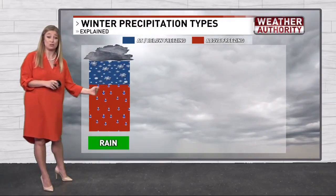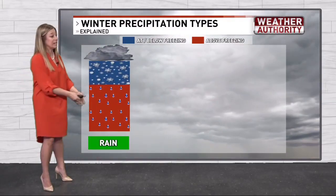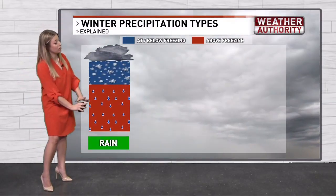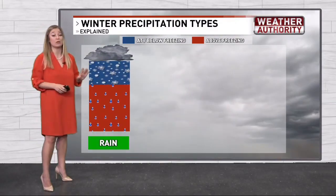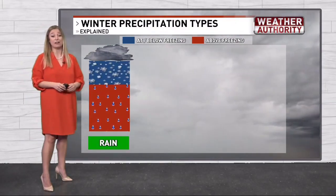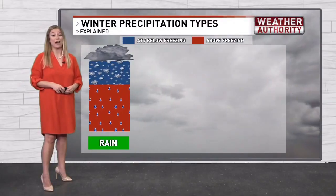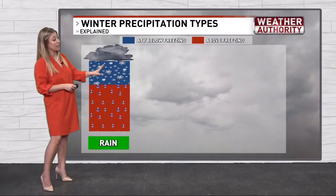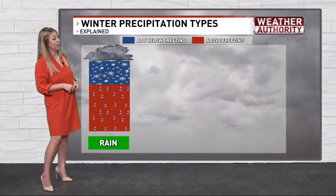it melts into rain, and that stays in a warmer layer all the way to the ground. So we see that rain on the ground, even though it started as snow up above.